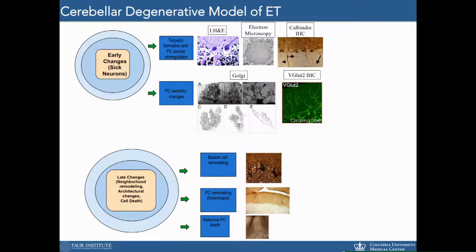Recent mechanistic studies suggest a role for the cerebellum in the pathophysiology of essential tremor. Evidence for this comes from clinical studies, which consistently identify cerebellar signs in ET patients, which can also include eye movement abnormalities and gait ataxia, as well as neuroimaging studies and neuropathological studies, which have identified an array of changes in the cerebellar cortex, primarily involving Purkinje cells and surrounding neuronal populations, including basket cells.